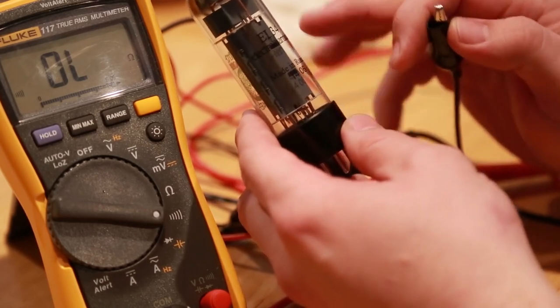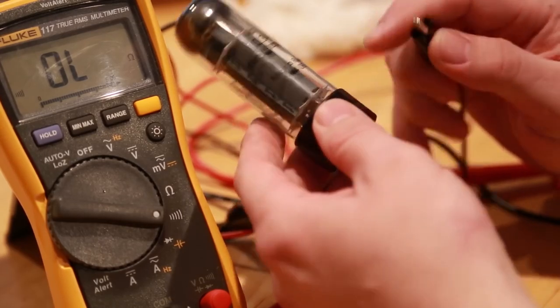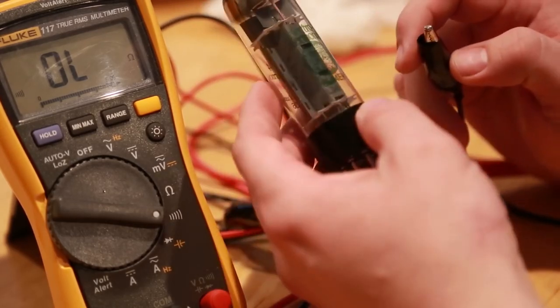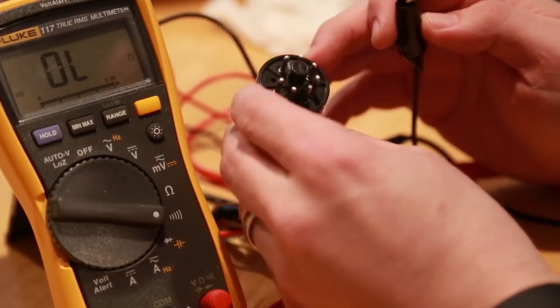Some power tubes do occasionally have the negative grid, which I think is grid 2, connected to cathode directly in the tube and so it would just have one pin for that. That's why you need to refer to the data sheet and see if there is something that should have continuity, but otherwise that's normally not the case.